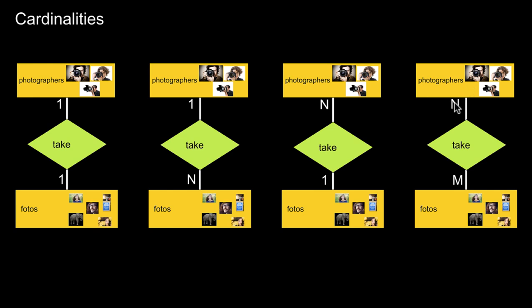An interesting question is why we write N-to-M rather than N-to-N or using any letters. That's just how these notations were invented. The convention is to use different letters — N and M — where each letter denotes an arbitrary number (a star). It wouldn't make a semantic difference to write N-to-N, but we write N-to-M by convention.